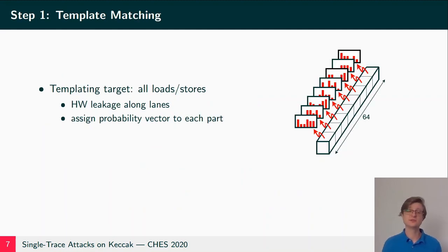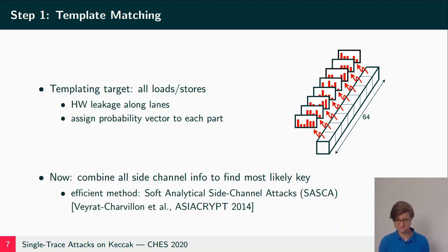Now how does the attack actually work? The first step in the attack is template matching. Typically software implementations of Keccak work along the lanes of the state, so along the 64-bit parts. We think that the lanes are split up into bytes or 16-bit or 32-bit words. For templating we target all loads and stores from and to SRAM. The template attack gives then a probability vector to each processor word that is loaded and stored from SRAM. Now we have all these distributions for each processor word and we combine all this information to find the one most likely key.